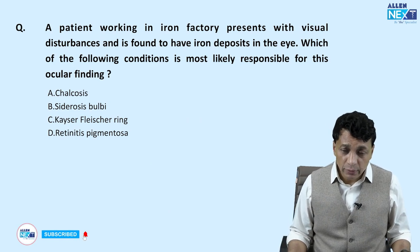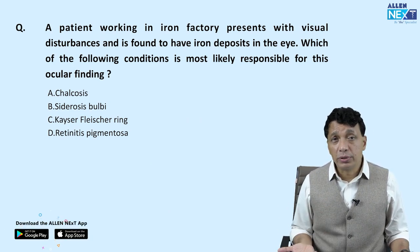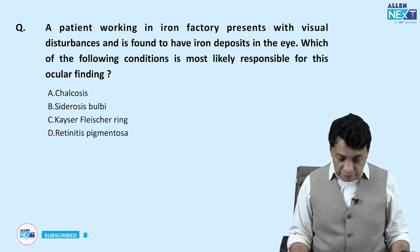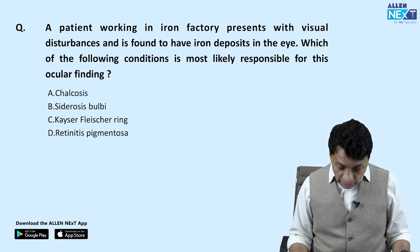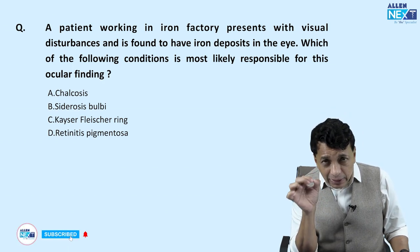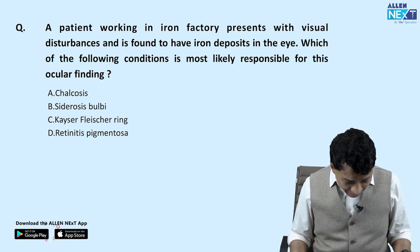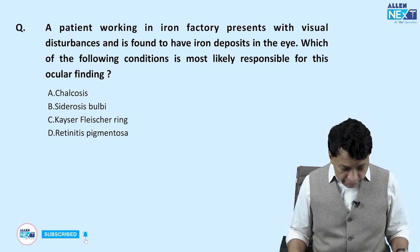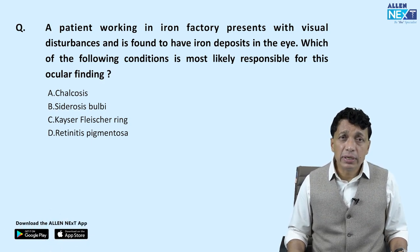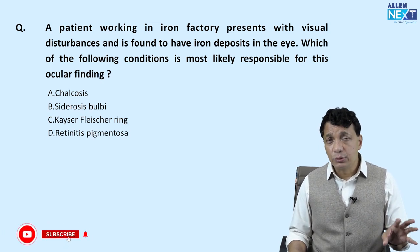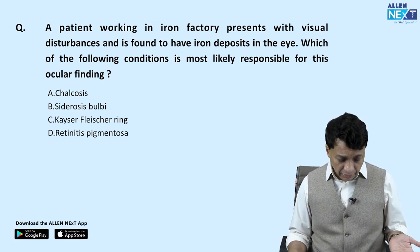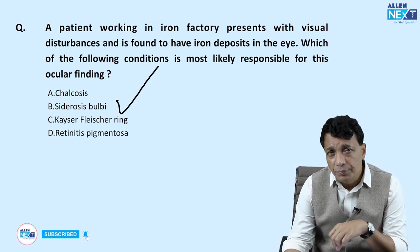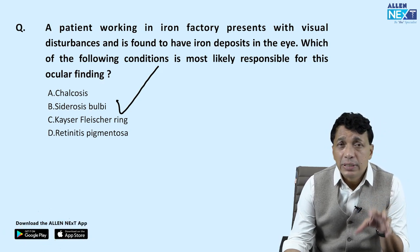A patient working in an iron factory presents with visual disturbances and is found to have iron deposits in the eyes. Which condition is most likely responsible for this ocular finding? Remember — iron factory, iron findings. Chalcosis is incorrect because that means copper deposition. The answer is siderosis bulbi, which means iron deposition in the eyeball.